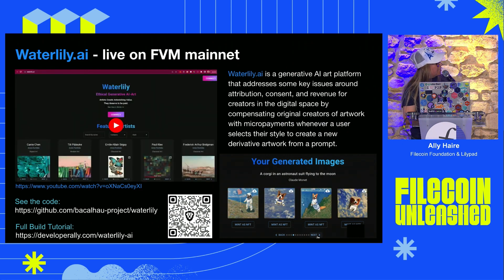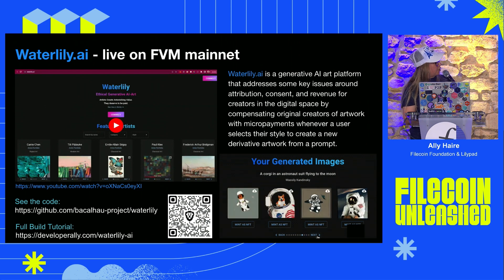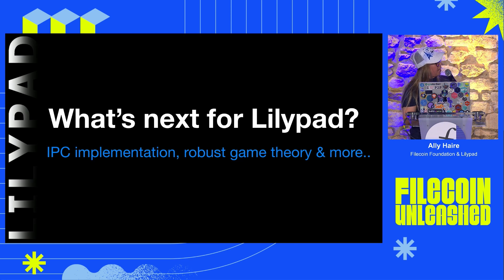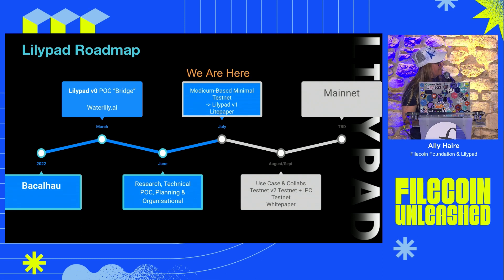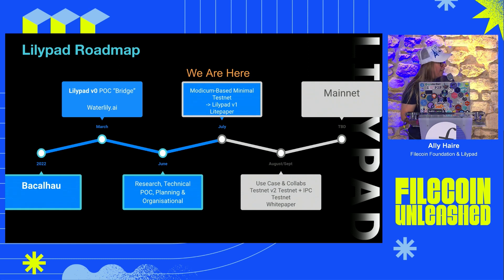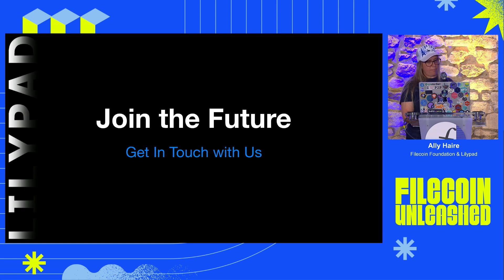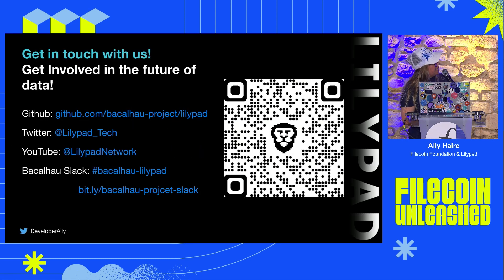This is an example of using a distributed network for attribution — showing how Web3 can solve some of those AI problems. As for the future of Lilypad: one of the next things we'll do is deploy this to the IPC network — for those who haven't heard about it, there's a talk from Marco coming up about how scalable that network is going to be. We'll also be building out a more robust testnet and more use cases.